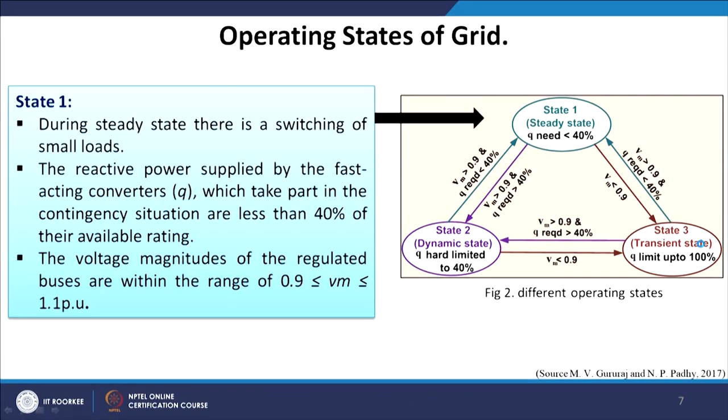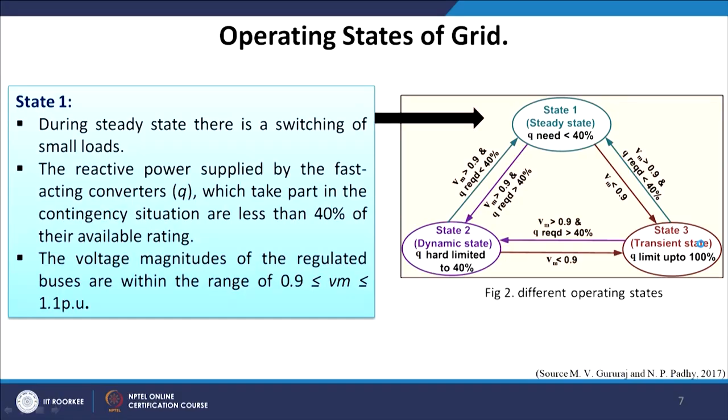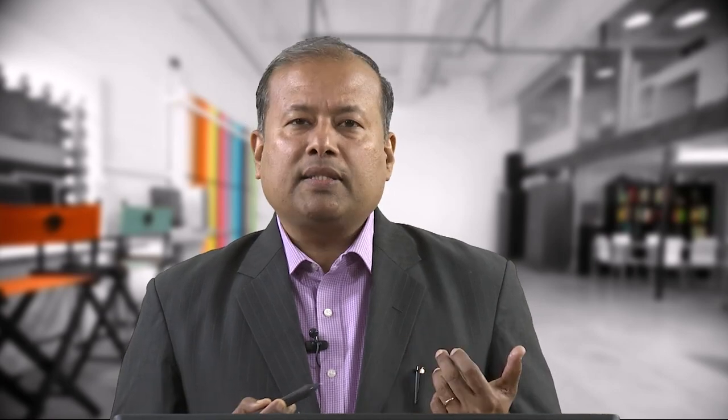In any system we encounter three different states: the first is the steady state, then the dynamic state, and finally the transient state. During steady state, small loads are switched on and the variation is not significant. The reactive power supplied by the fast-acting converters that take part in contingency situations is less than 40 percent of their rated capacity.